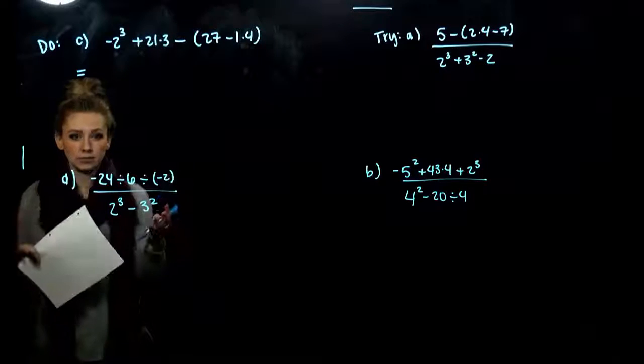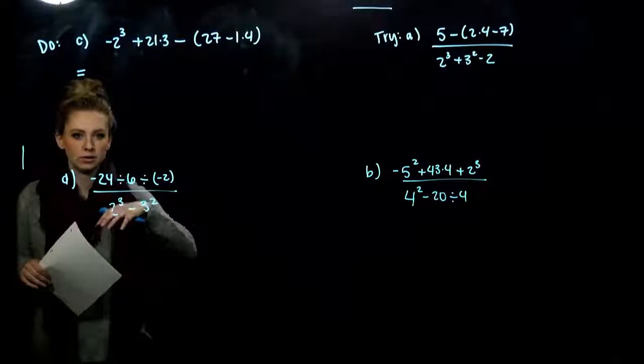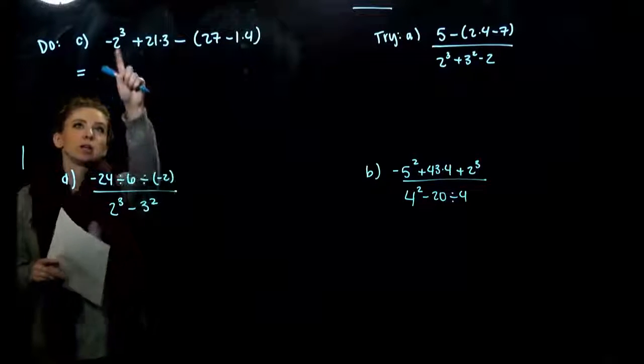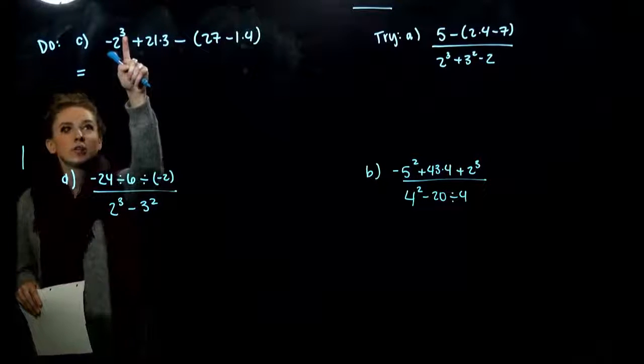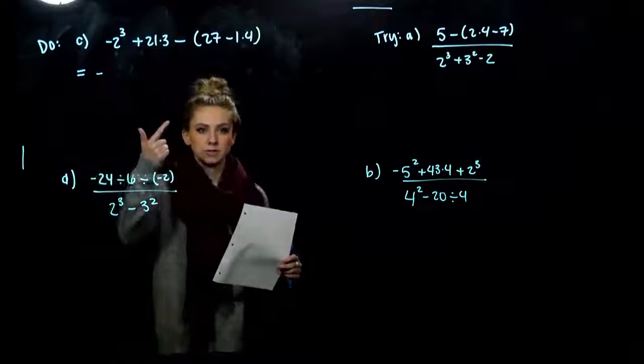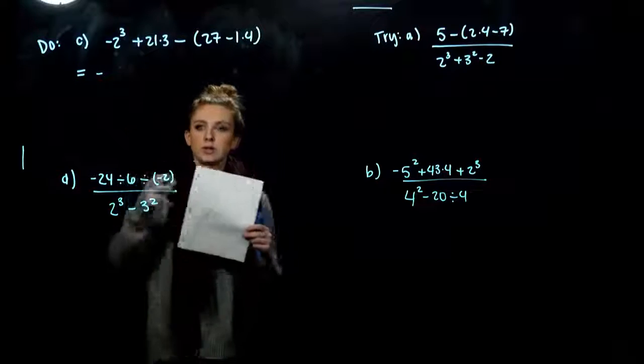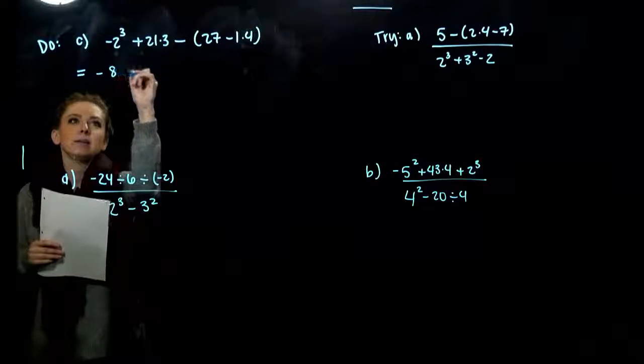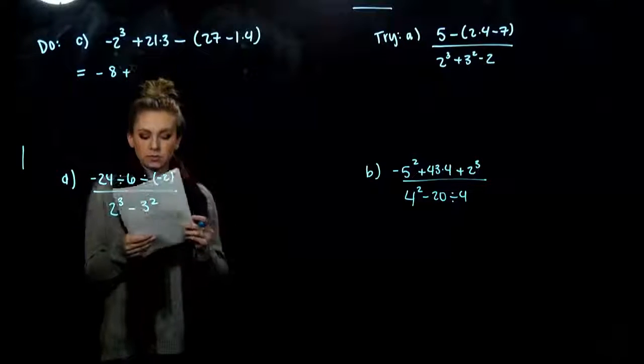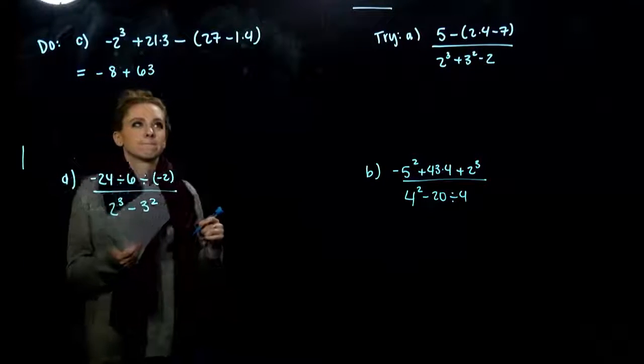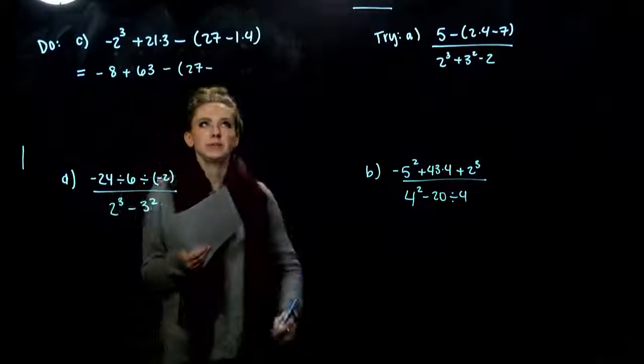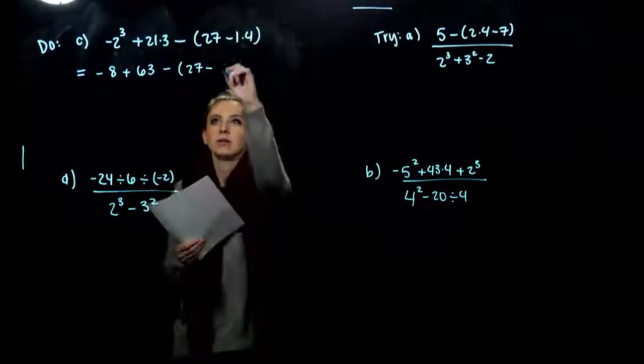So our second option, I'm taking 2, cubing it, then making it negative at the end. So 2 times 2 is 4. Times another 2 will give me minus 8. If I compute 21 times 3, we're looking at 63. Now I'm working on the inside. 27 is going to change and I'm subtracting 4.